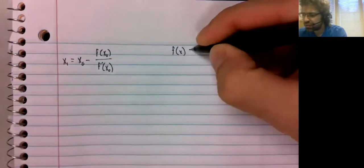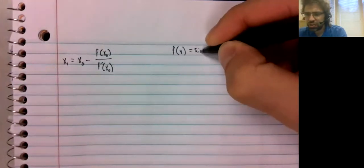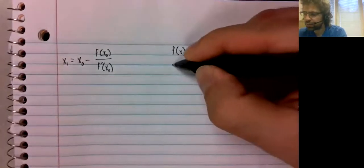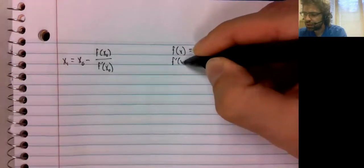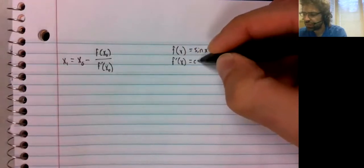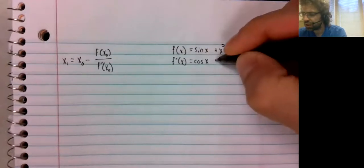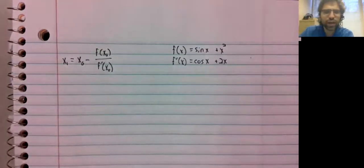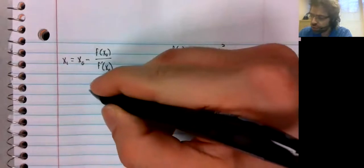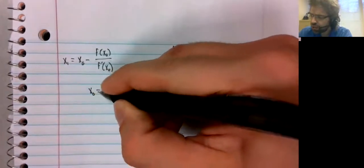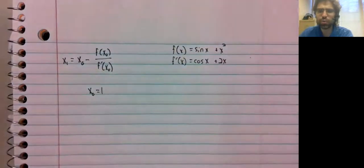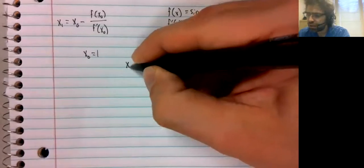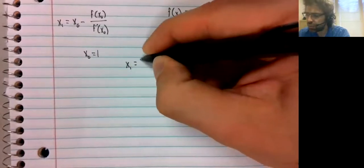F of X is the sine of X plus X squared. F prime of X is the cosine of X plus two X, quoting the problem. Use X zero equals one as your initial guess and calculate one iteration.